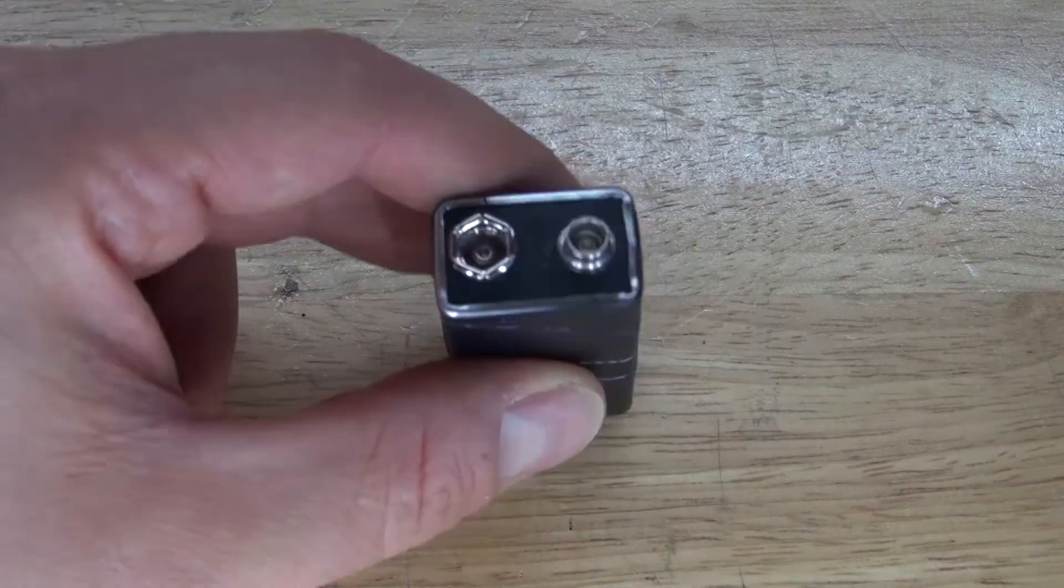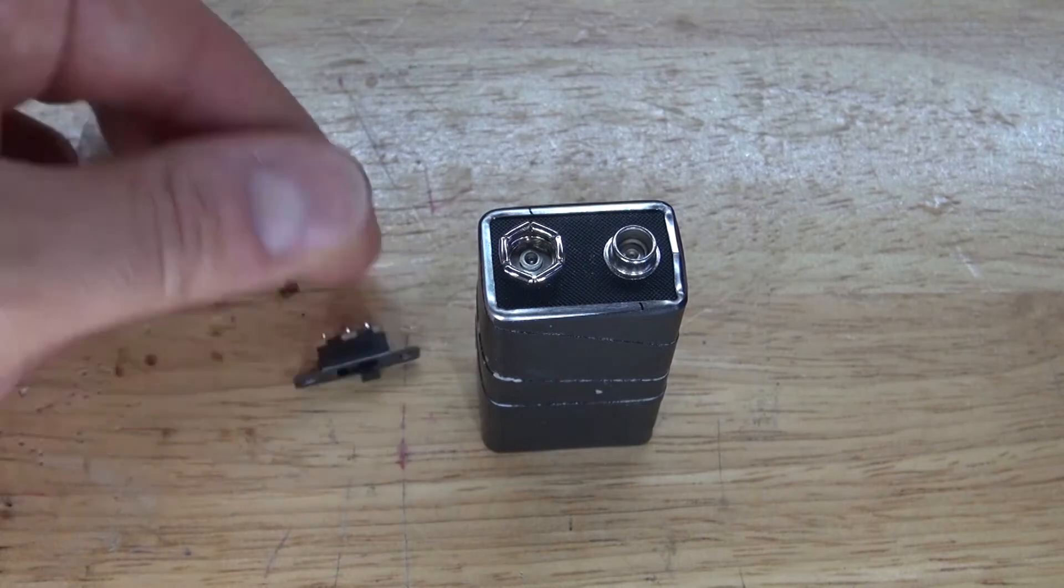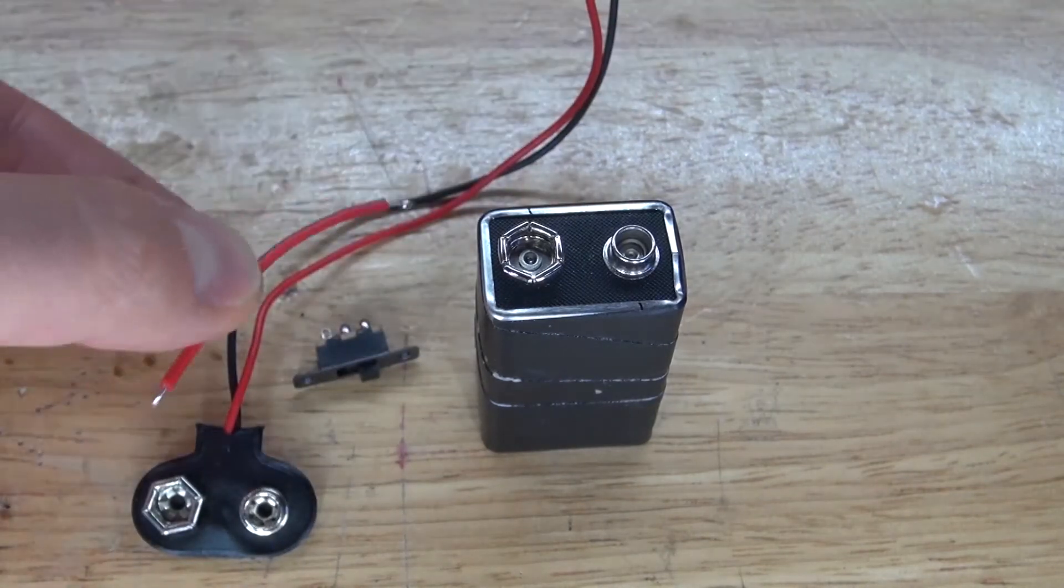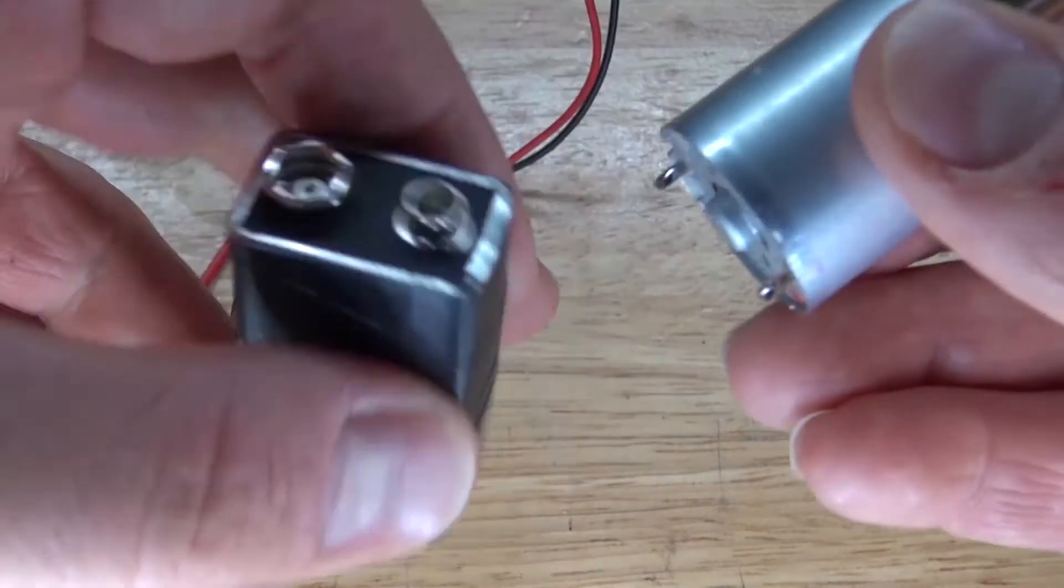The items you're going to need is a 9-volt battery, a slide switch, a 9-volt battery clip, some wires, and a vibrating DC motor.